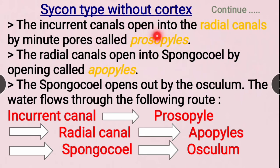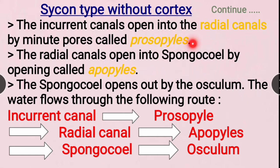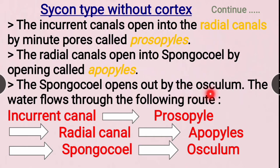The incurrent canals open into the radial canals through minor pores called prosopyles. The radial canals then open into the spongocoel through openings called apopyles.